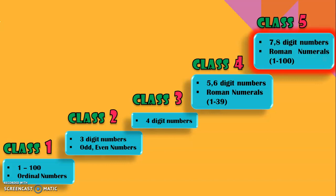Now in class 5, we will be dealing with 7- and 8-digit numbers and also learn to write Roman numerals from 1 to 100. So that is why they are called as large numbers, because we are going to deal with 7- and 8-digit numbers.